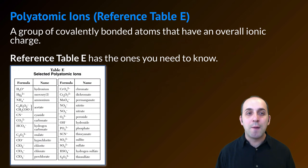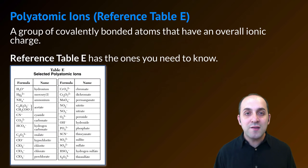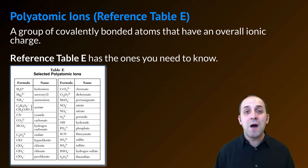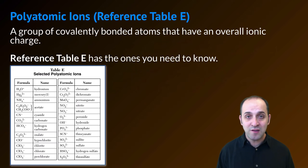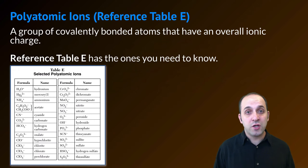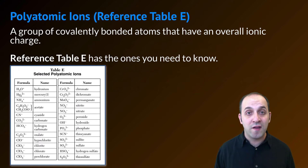Let's pause for a moment and talk about polyatomic ions. The polyatomic ions that you need to be familiar with are on reference table E. A polyatomic ion is just a group of covalently bonded atoms that have an overall ionic charge. So even though the ion has an ionic charge, within the ion the bonds that hold the atoms together are covalent bonds.